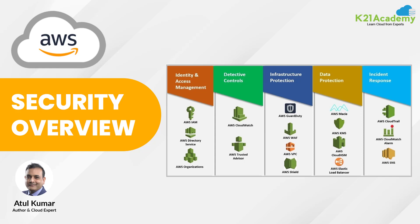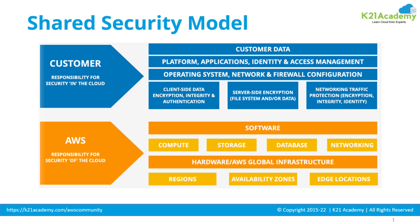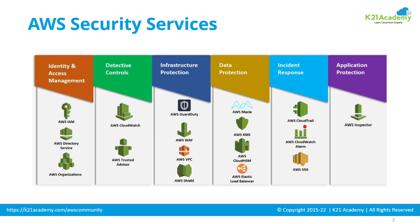Security on cloud is a shared responsibility model where some part of the cloud is the responsibility of your cloud vendor like AWS, whereas others are the responsibility of you as a customer. AWS has around 15 or so services that are purely security-related, ranging from identity and access management to detective control, infrastructure protection, data protection, incident response, and application protection. We're going to cover all this in today's video.